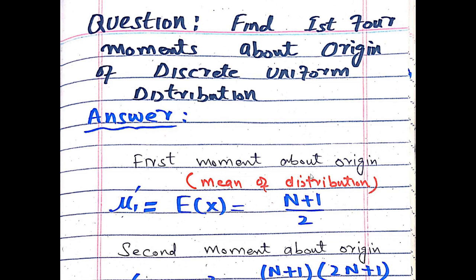The first moment about the origin is μ₁' which is equal to the expected value of X. The first moment about the origin equals the mean of the distribution, which is also represented by E(X), and its answer is (N+1)/2. The proof is already solved on my channel with the mean of the discrete uniform distribution.